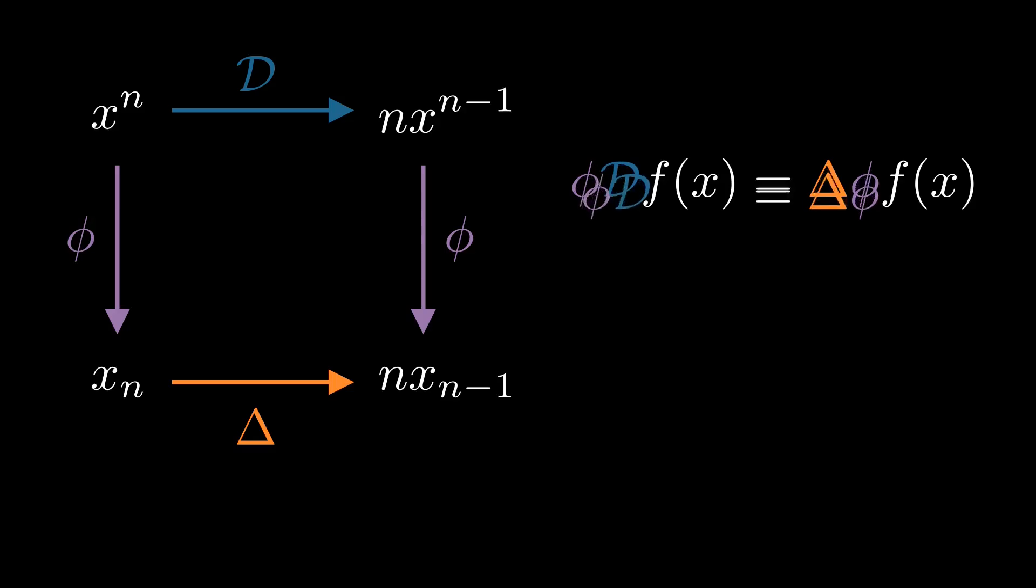I like this more concise, more abstract form of the idea. Notice that we can't divide through by phi to get d equals delta, and that's because left and right multiplication by phi are not the same thing. We can, however, multiply through on the right by phi inverse, when it exists, to get something like this.